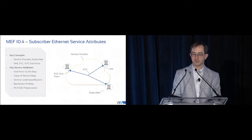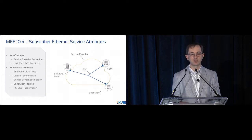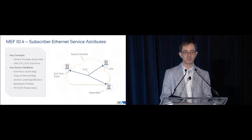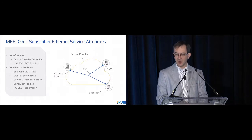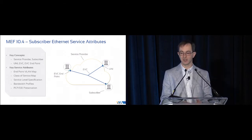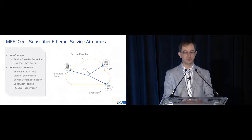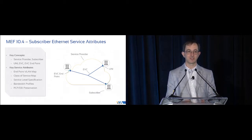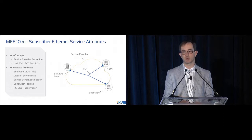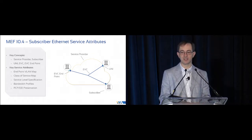MEF 10.4 is the subscriber Ethernet service attributes standard. This is the standard that introduces concepts like service provider and subscriber for carrier ethernet, UNIs, EVCs, and EVC endpoints. Some of the key service attributes include the VLAN map at the UNI — how do I know which VLANs go to which service — and the class of service map, which defines what class of service the subscriber wanted for which traffic, based on things like the PCP value in the Ethernet header or the DSCP value in the IP header.